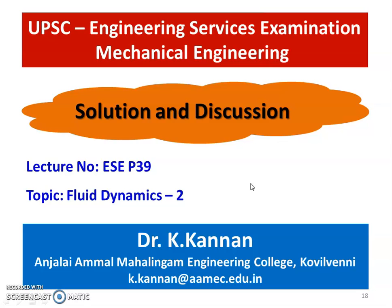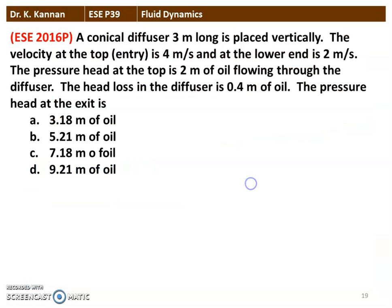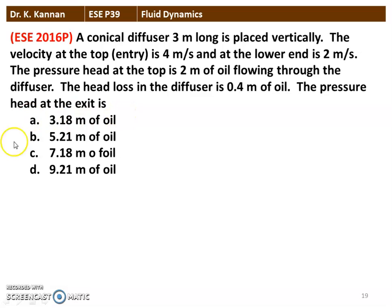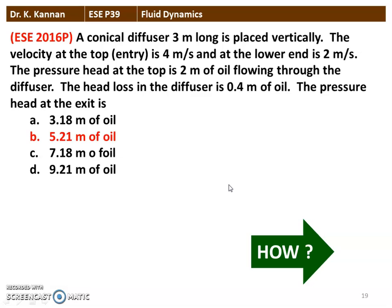We are going to take a few questions in the topic of fluid dynamics. The first question is from the 2016 question paper. A conical diffuser 3 meters long is placed vertically. The velocity at the top entry section is 4 meters per second and at the lower end is 2 meters per second. The pressure head at the top is 2 meters of oil. The head loss in the diffuser is 0.4 meter of oil. The correct answer for the pressure head at the exit is 5.21 meters of oil.